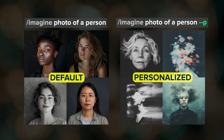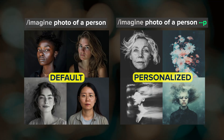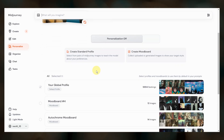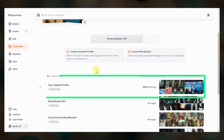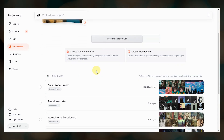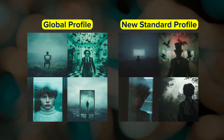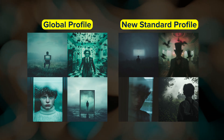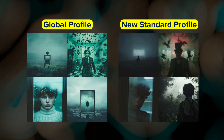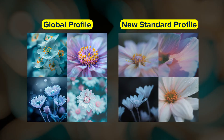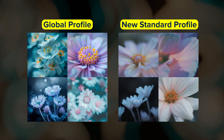Prior to this release, when you used personalization, you were using your global profile. Your global profile still exists and you can continue to rank image pairs to refine that profile, but you can also create what's called a standard profile, which is generated after you rank a new set of at least 40 image pairs.